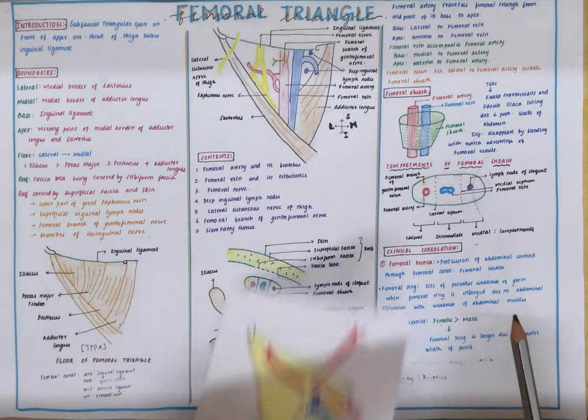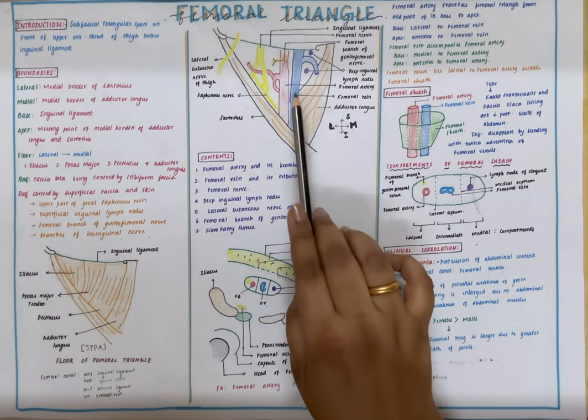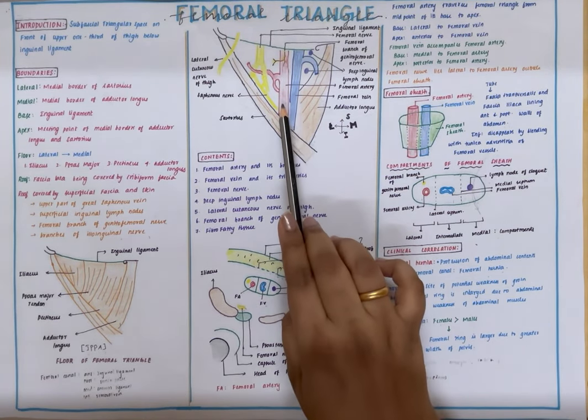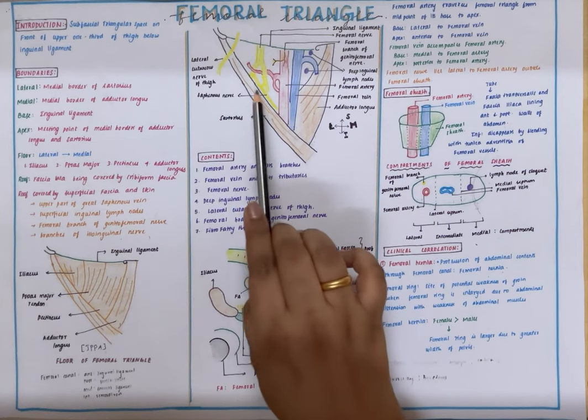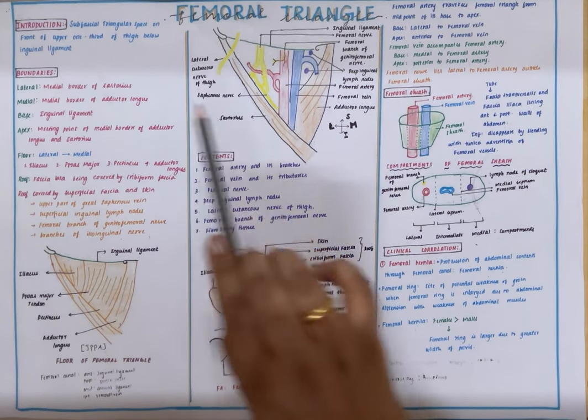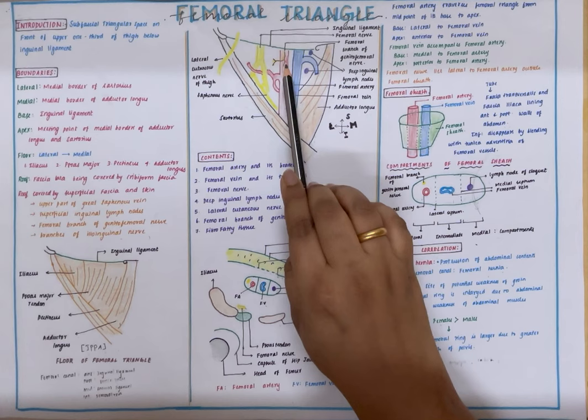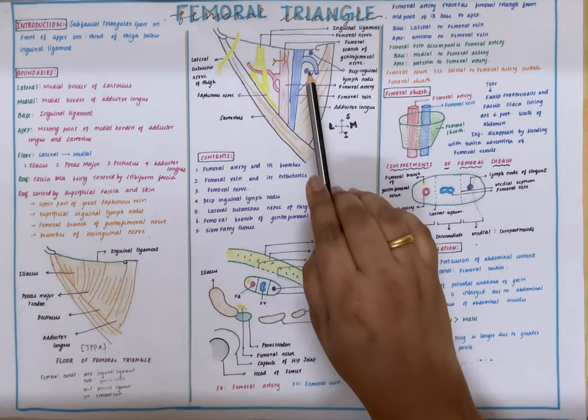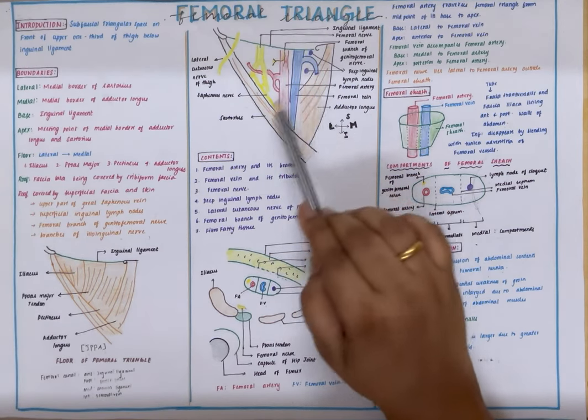Now let us take a look at the contents of the femoral triangle. It contains femoral vein and its tributaries, femoral artery and its branches, femoral nerve, the lateral cutaneous nerve of thigh, the femoral branch of genitofemoral nerve, deep inguinal lymph nodes, and fibrofatty tissue.